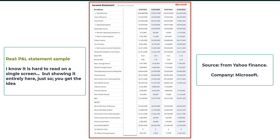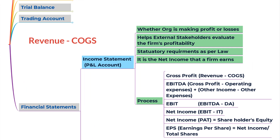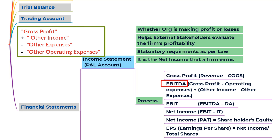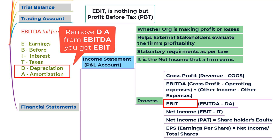For big companies, the P&L statement may be a page-long statement. To calculate the profit and loss account: take net sales revenue, deduct the cost of goods sold to get gross profit, then add other income and subtract other expenses and operating expenses from gross profit to get EBITDA — earnings before interest, taxes, depreciation, and amortization.